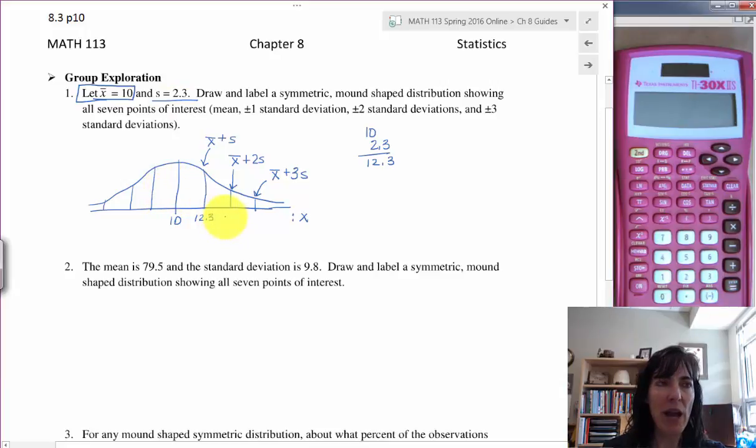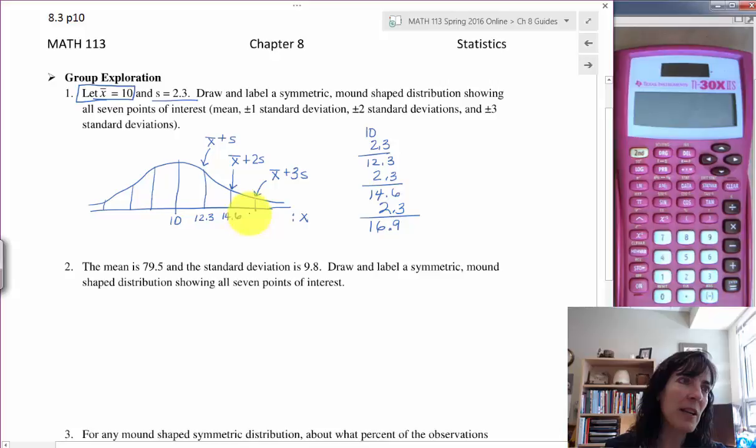I can keep adding on. I can either do 12.3 plus 2.3, another standard deviation, so 3 plus 3 is 6, 4, 14.6, so I can write that down here. This is the easy way to do it. Then add another 2.3 and I get 0.9, 16.9, and that is my highest one. That gives me all of my data values for the mean adding on different numbers of standard deviations.